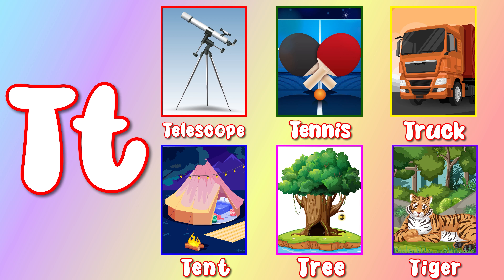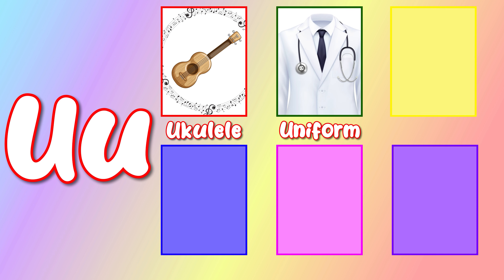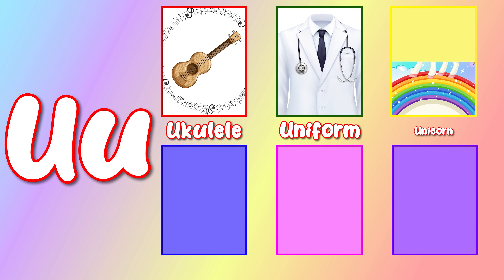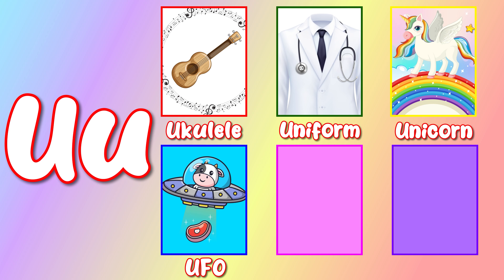T is for tiger. U. U is for ukulele. U is for uniform. U is for unicorn. U is for UFO. U is for unicycle. U is for umbrella.